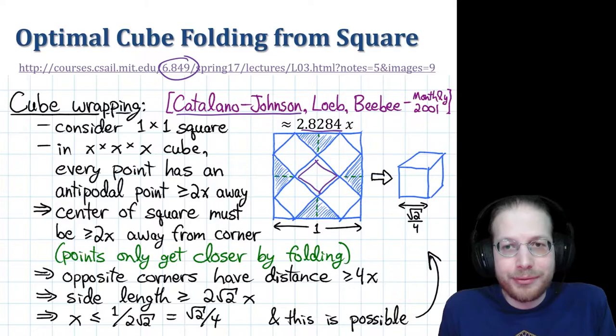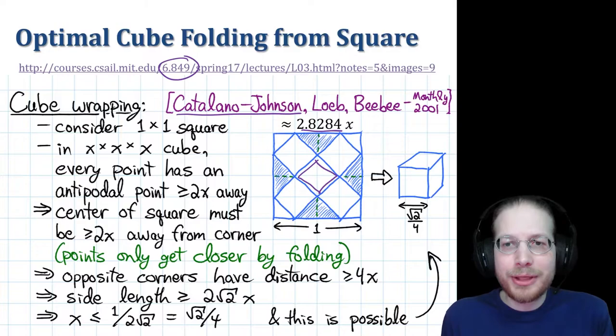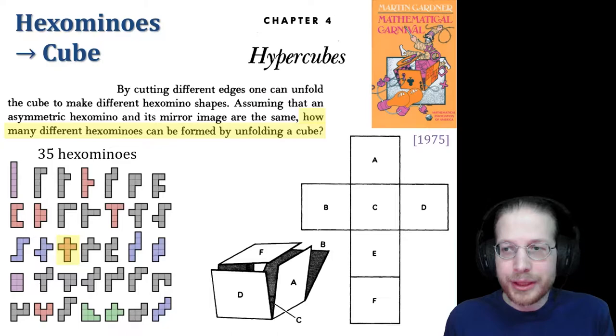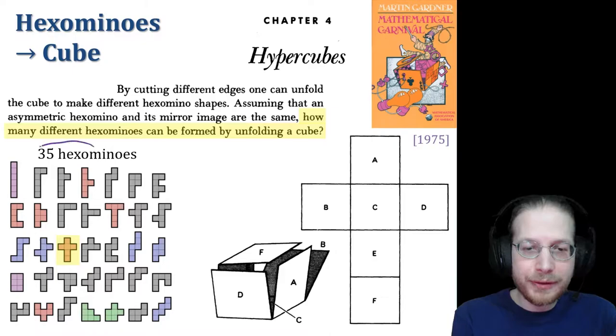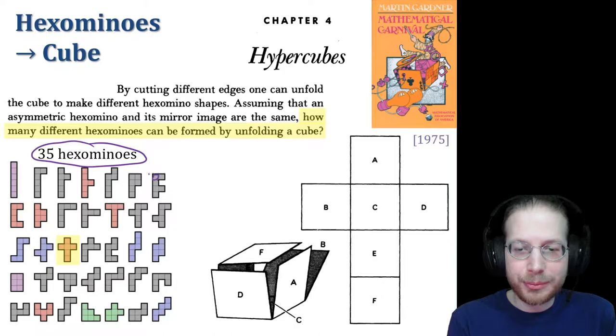This problem is well studied and completely solved. The smallest square you can fold into a cube is about 2.8x2.8. This is the folding. It rotates everything by 45 degrees. And it's proved optimal by Catalano Johnston et al.